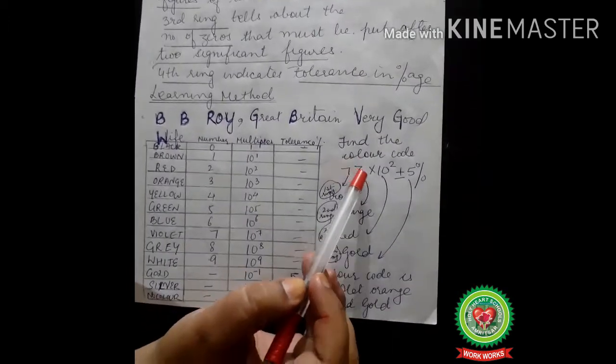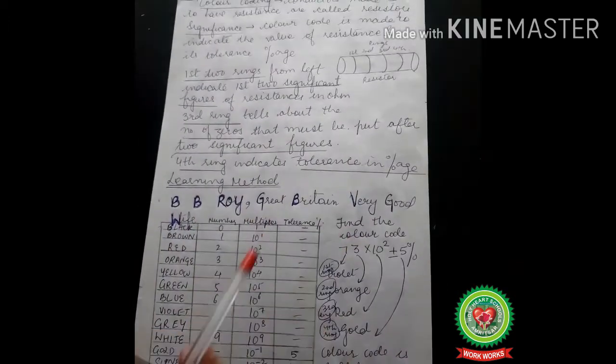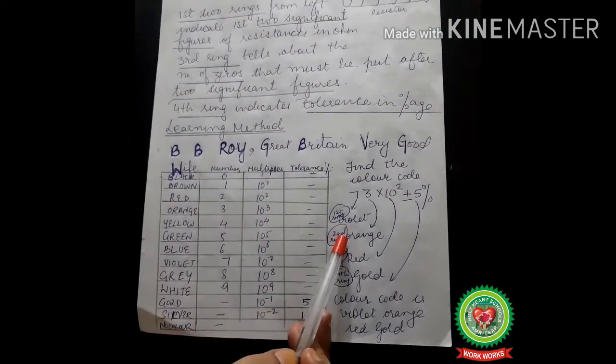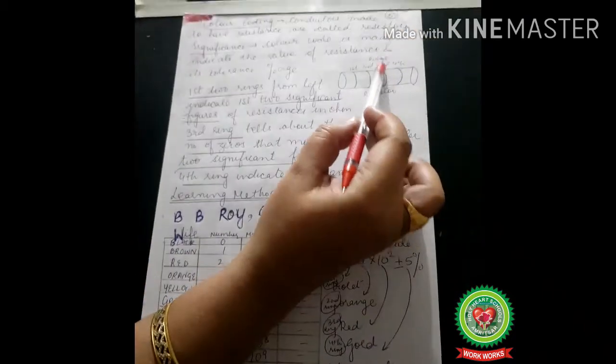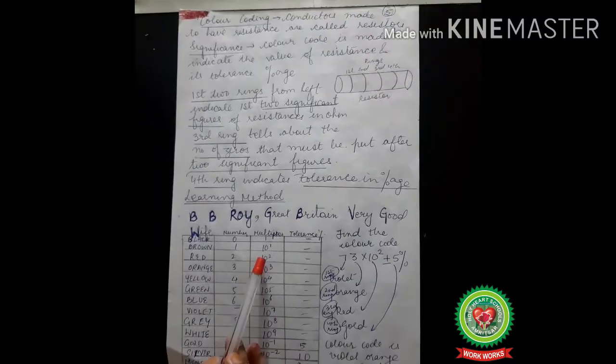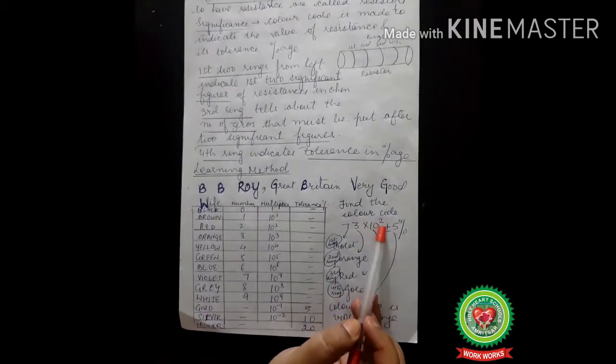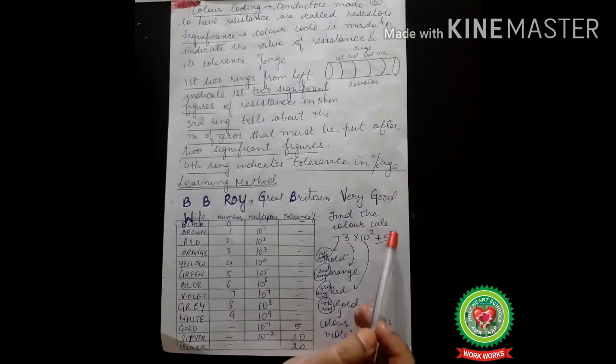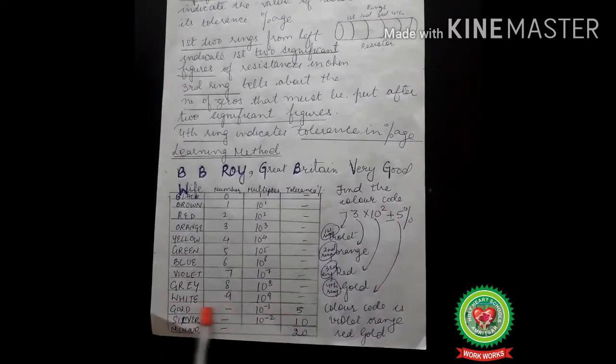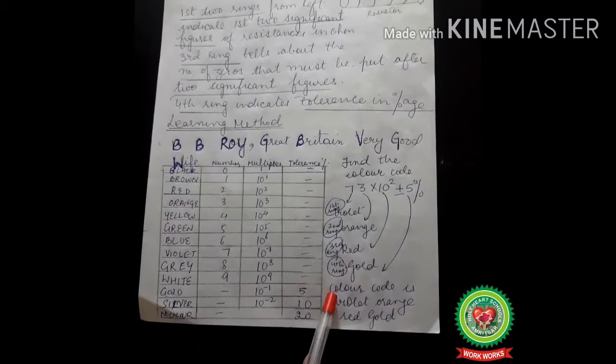Then comes 10 to the power two. 10 to the power two means the third ring is telling us 10 to the power two, that is red color. Then comes plus minus, it can be increased or it can be decreased. So it is five percent. Five percent is coming here, which is called gold. So what is the answer? Color code is violet, orange, red, and gold.